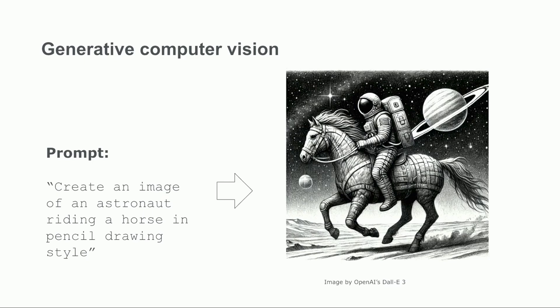Models like DALI and Stable Diffusion learn through supervised training on millions of image-text pairs, along with specialized generation techniques like denoising diffusion. When given a prompt like create an image of an astronaut riding a horse in pencil drawing style, these models generate new images by gradually refining random noise into coherent images that match the description.